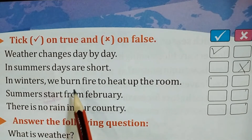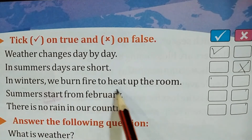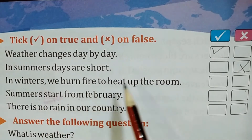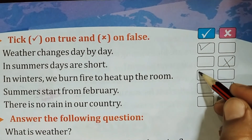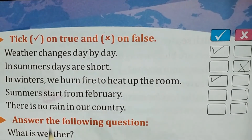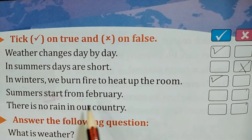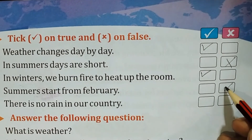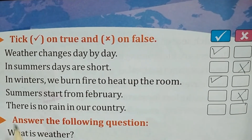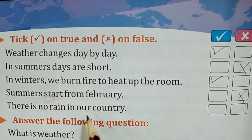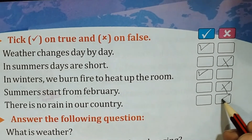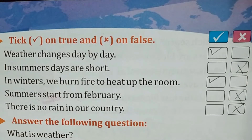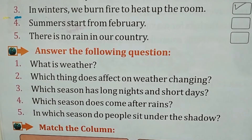In winters, we burn fire to heat up the room — سردیوں میں ہم کمرے کو گرم کرنے کے لیے آگ جلاتے ہیں — this is true, tick. Summer starts from February — گرمی فروری سے شروع ہوتی ہے — this is wrong, cross. There is no rain in our country — یہ بھی غلط ہے — cross, because our country does have rain.